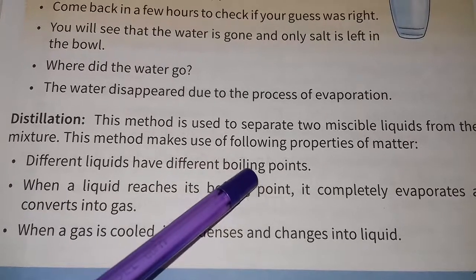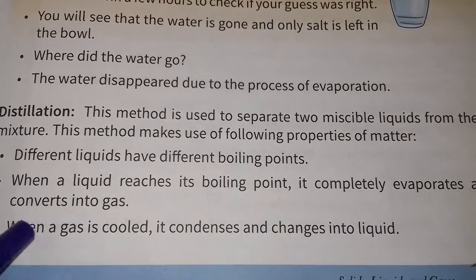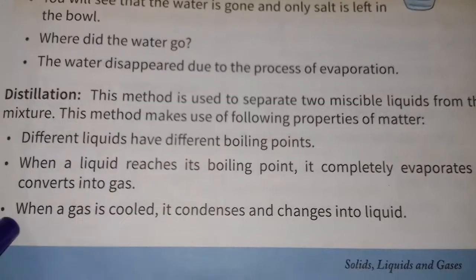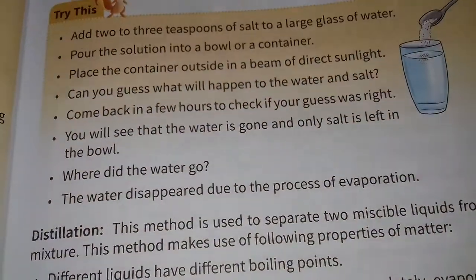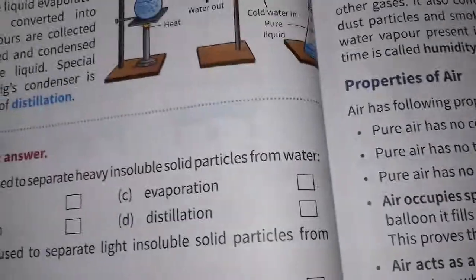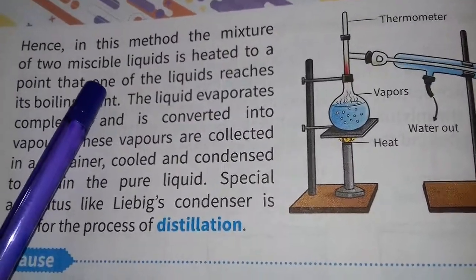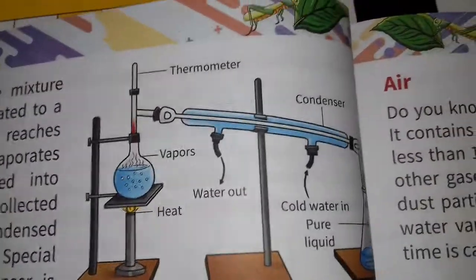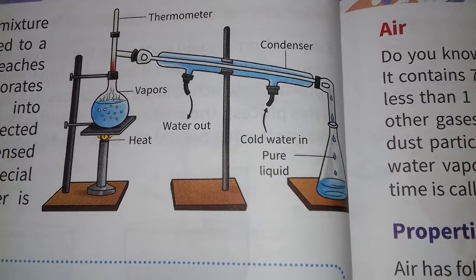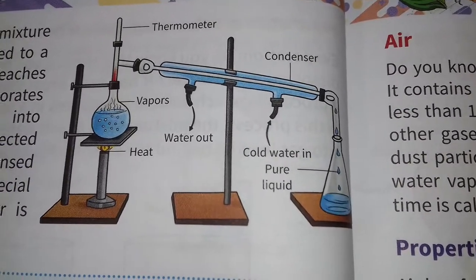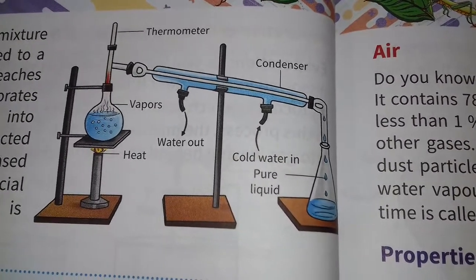Different liquids have different boiling points. When a liquid reaches its boiling point it completely evaporates and converts into gas. When a gas is cooled it condenses and changes back into liquid. In this method the mixture of two miscible liquids is heated to a point that one of the liquids reaches its boiling point, evaporates completely, and is converted into vapors.